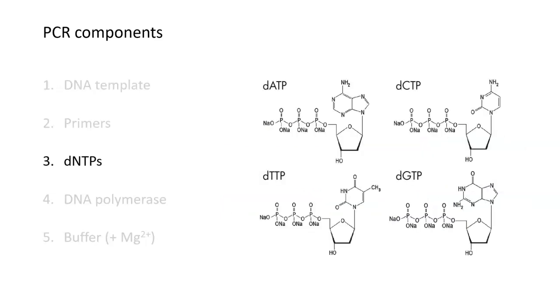You have a template that you're going to copy, you have primers to specify what you're going to copy, and then if you want to make a new piece of DNA, you're going to need some monomers or nucleotides. In the case of a PCR reaction, those individual nucleotides—A, T, C, and G—are mixed together in a solution and referred to as dNTPs. These can be strung together to create new specific pieces of DNA.